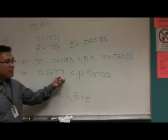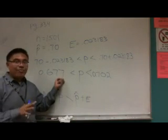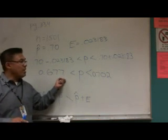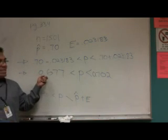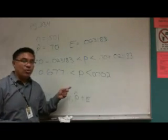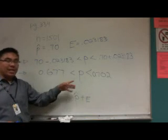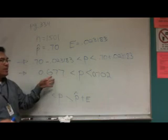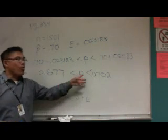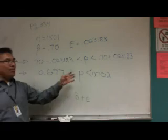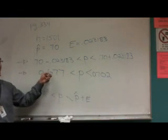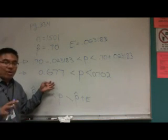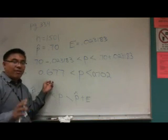So what this means is that we are 95% confident that the true percentage of adults that believe in global warming is somewhere between 0.677 to 0.723, right? That's the true probability of finding someone that believes in global warming, or that's the true proportion of people who believe in global warming. We think it's somewhere between here to there, somewhere between 68% to 70%, right? And we are 95% confident, because remember, we use a confidence level of 95%.